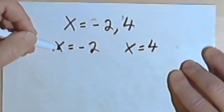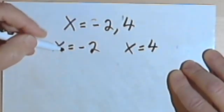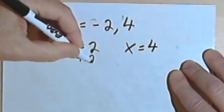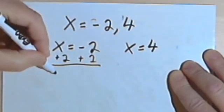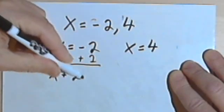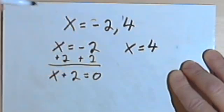And then if I wanted to, I could take the equation on the left, x equals negative 2, I could add 2 to both sides, and I would end up with x plus 2 equals 0.